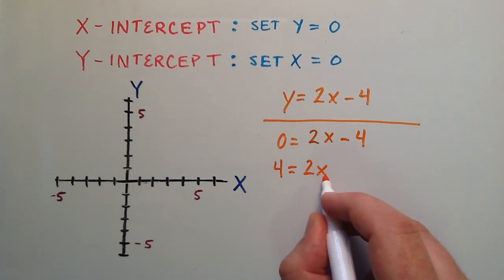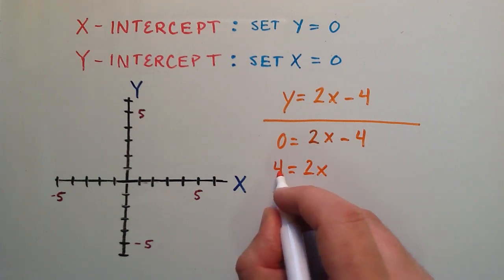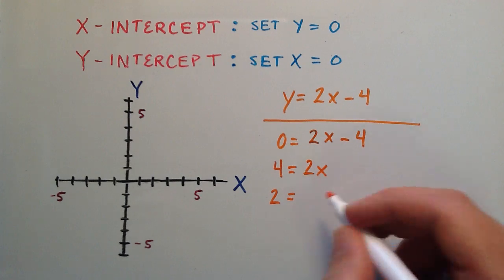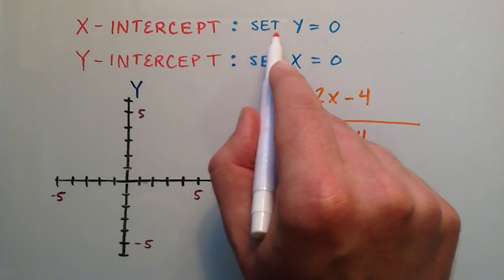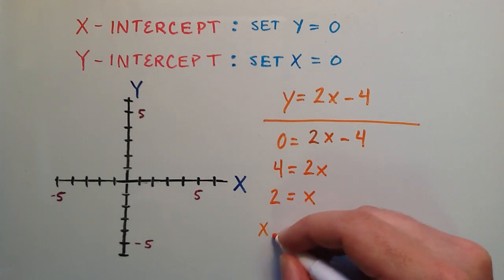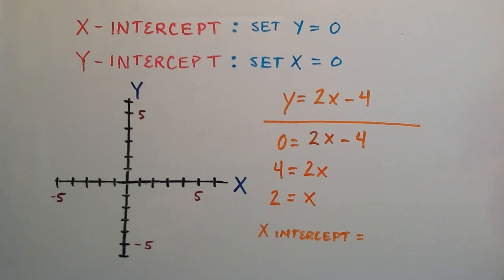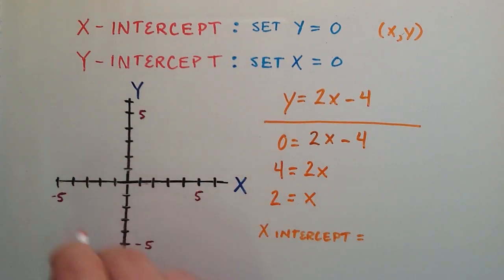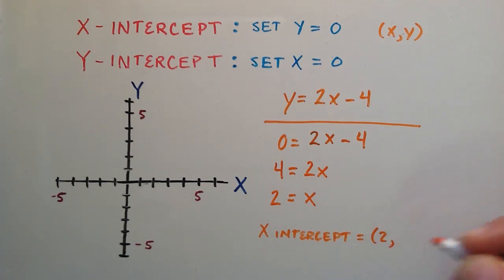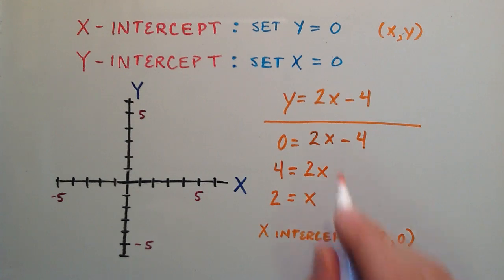Now we have 4 is equal to 2 times x. If we divide both sides by 2, we can get x by itself. 4 divided by 2 is equal to 2, and 2x divided by 2 is equal to x. So x equals 2 — this is the x component of our x intercept, and we know the y component is equal to 0. So our x intercept is the ordered pair with an x component of 2 and a y component of 0, which is the point (2, 0).